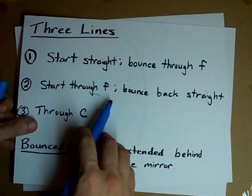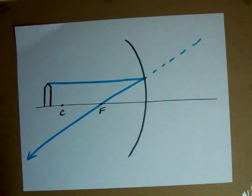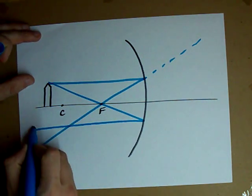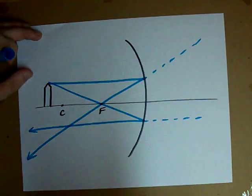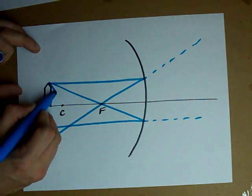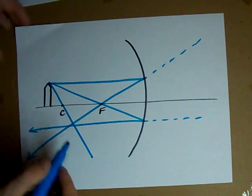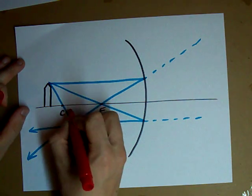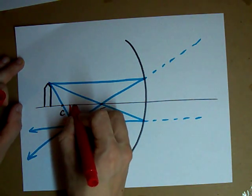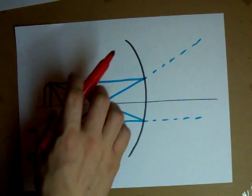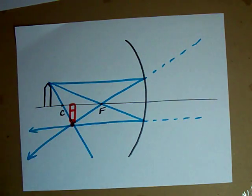Start through F, and bounce back straight. Go through F, bounce back straight. Go through C. Through C. There's nothing to bounce off of there. These all met in the same place too. They met right there. So the image for an object that is beyond C in a concave mirror is actually a little closer, but also in front of the mirror.